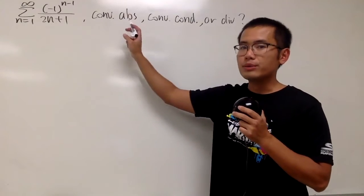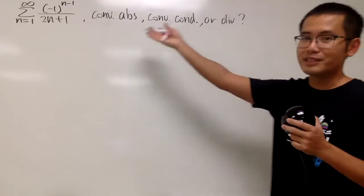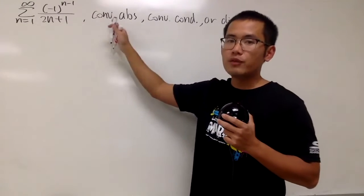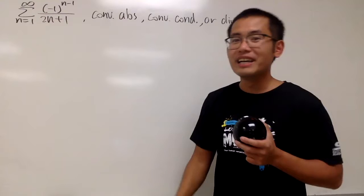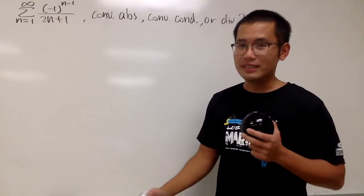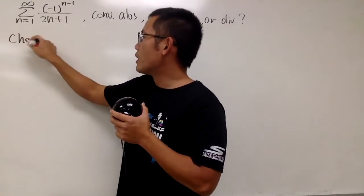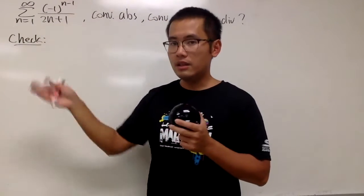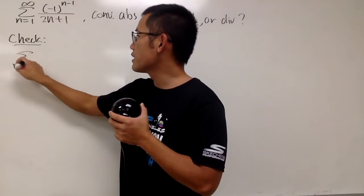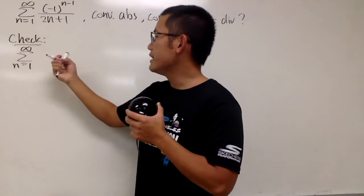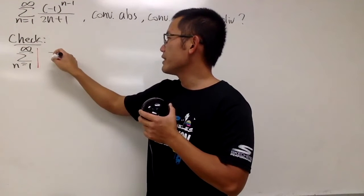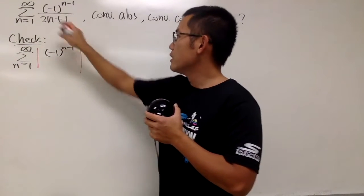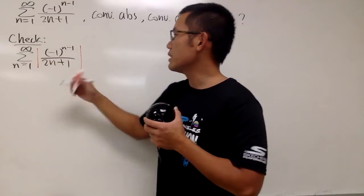We are going to see if this series converges absolutely or conditionally, or maybe it diverges. Whenever the question asks if the series converges absolutely or not, we'll first take the absolute value and see what happens. So here's the check — put the absolute value around the a_n formula, looking at the sum as n goes from 1 to infinity of the absolute value of (-1)^(n-1) over (2n+1).